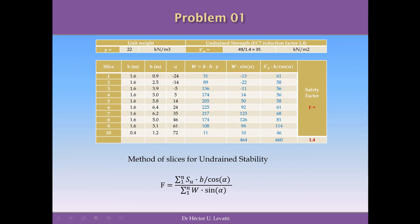The method of slices for this slope stability problem provides a formula to establish the safety factor. The safety factor equals the summation from 1 to n — where n equals 10 slices — of the clay strength multiplied by the width of every slice divided by the cosine of alpha, all divided by the summation from 1 to 10 of the weight of each slice multiplied by the sine of alpha. We use the table to compute the numerator and denominator of this formula.